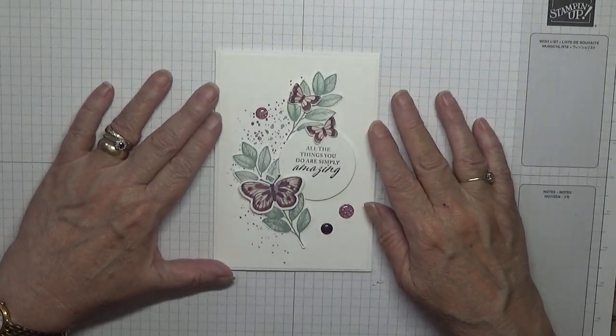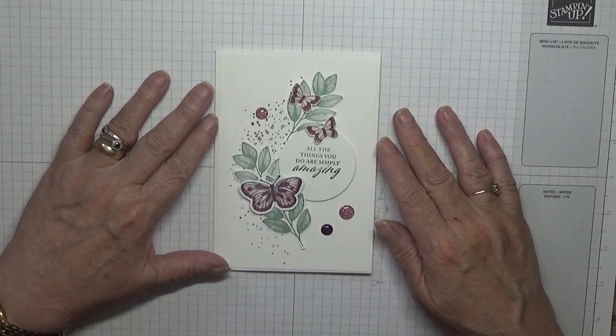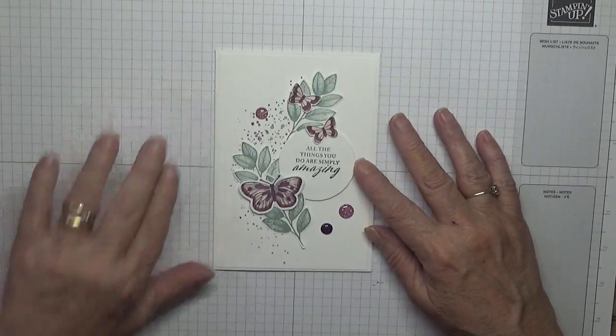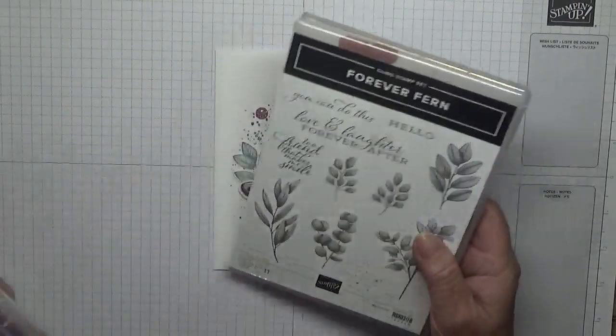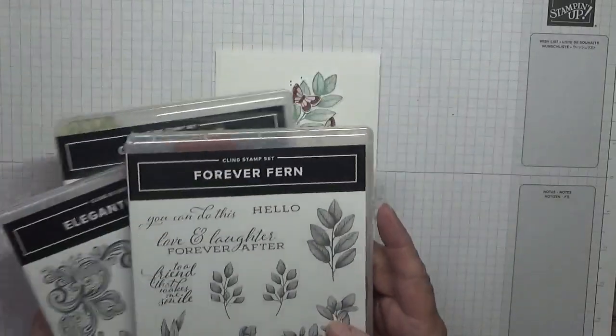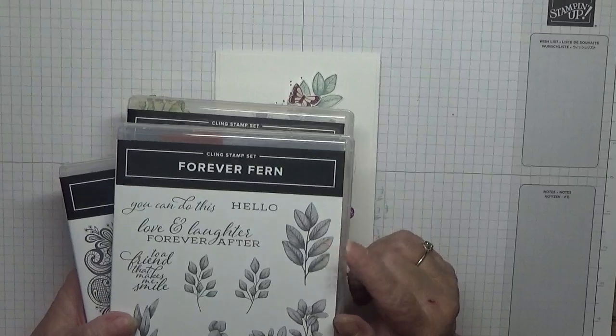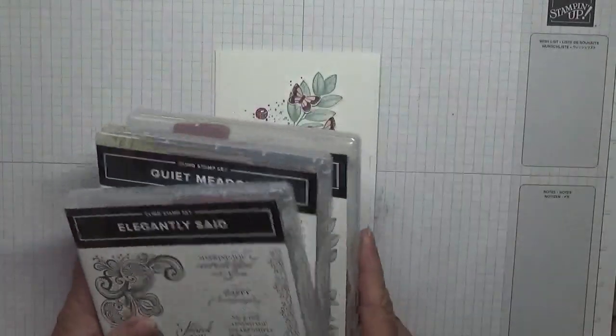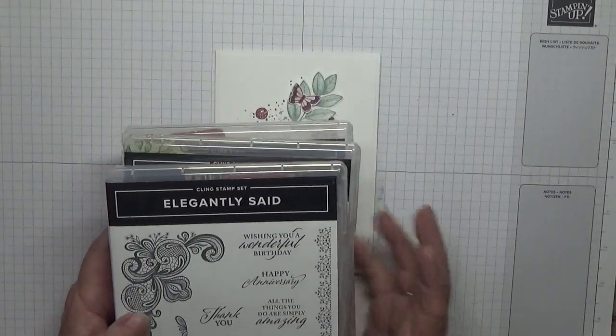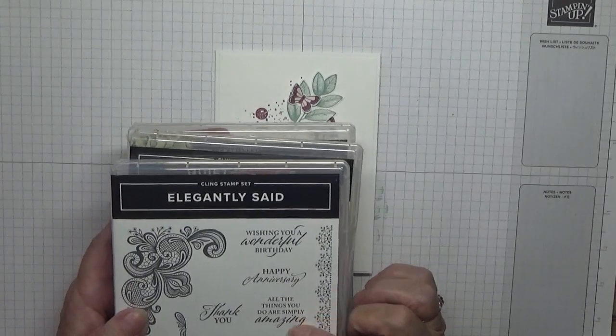Hello, Georgie B back again. Today I'd like to show you how I made this card using the stamp sets Forever Fern and Elegantly Said for all the things you do are simply amazing for that sentiment.